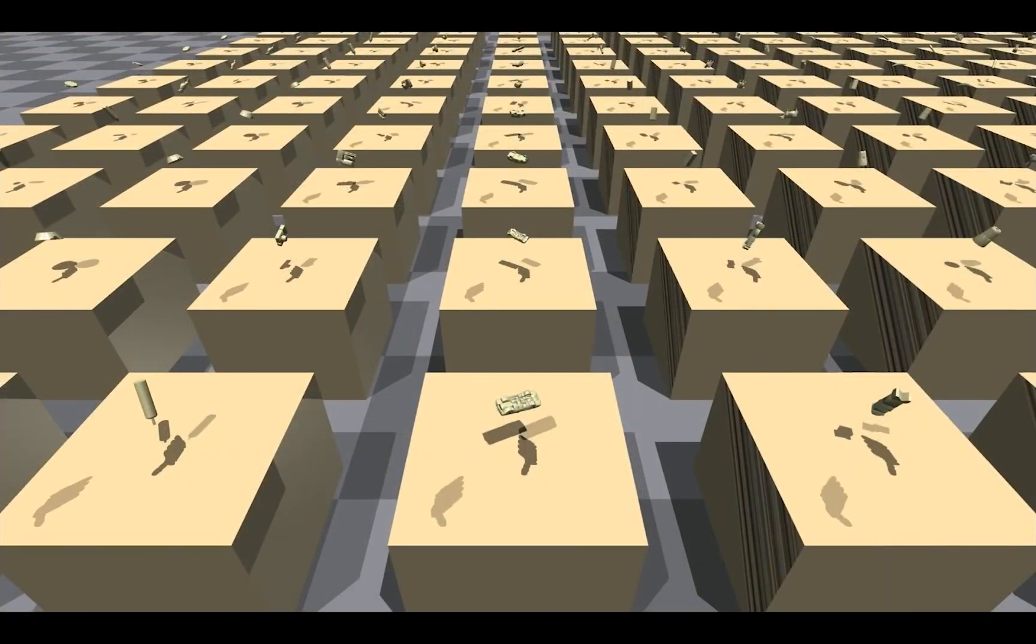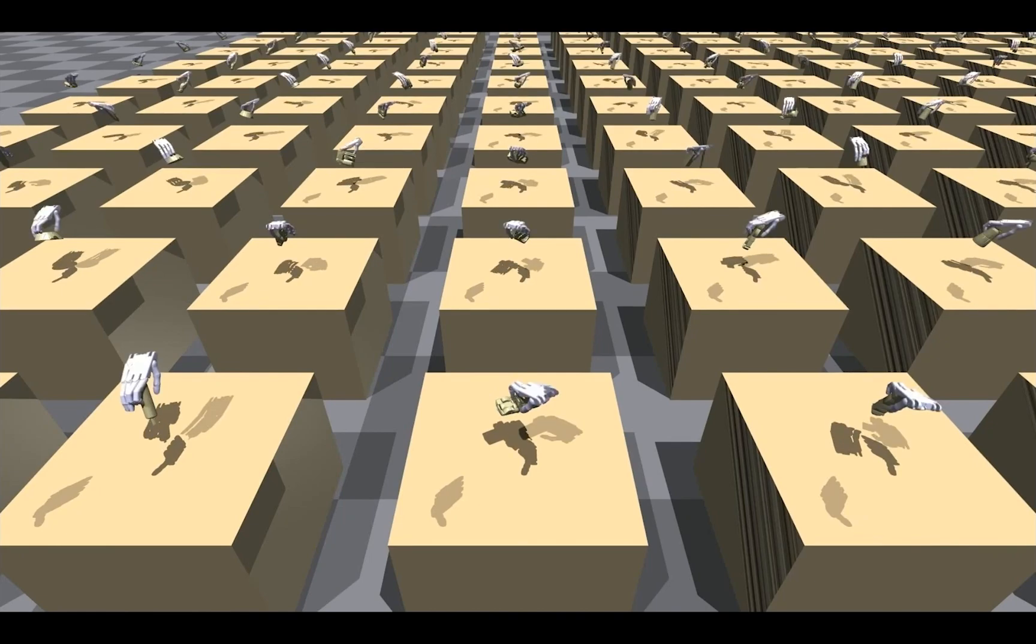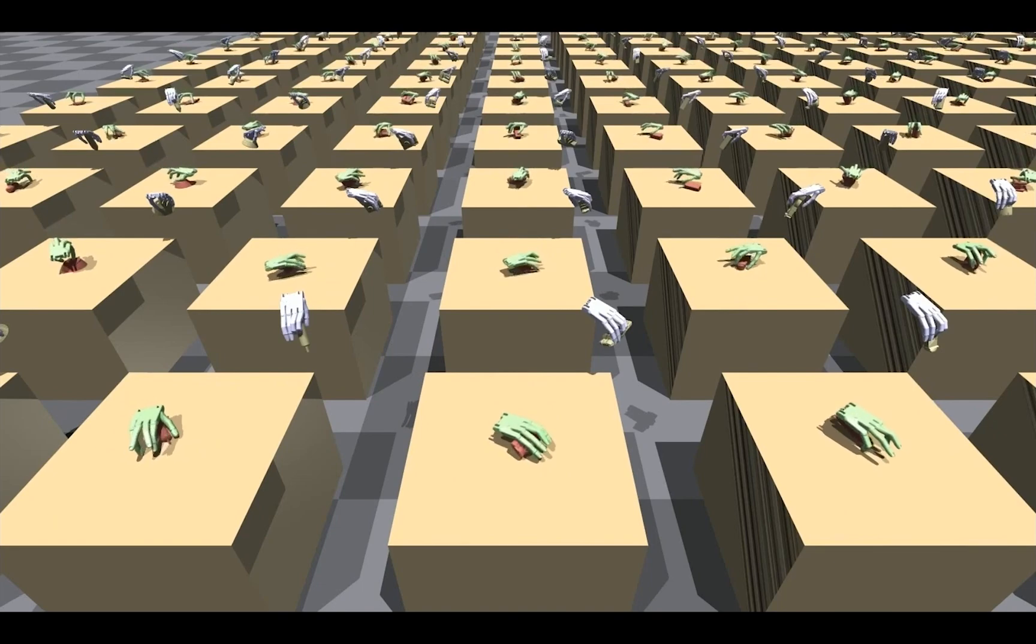Given an object, we first generate the target grasp pose, and then our goal condition policy will execute the target grasp in the simulator.